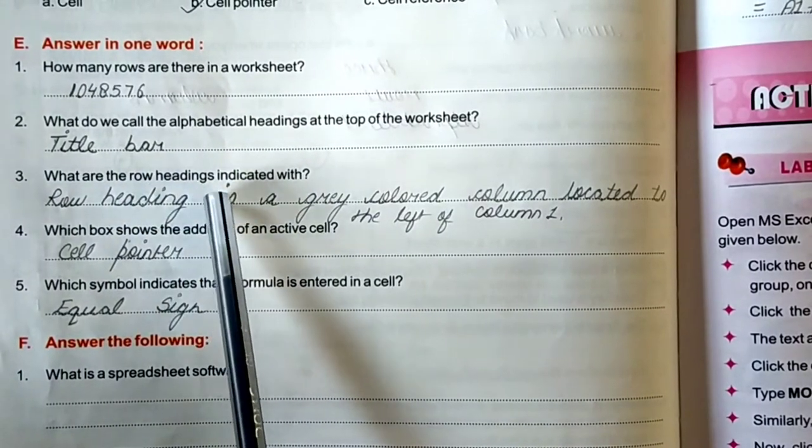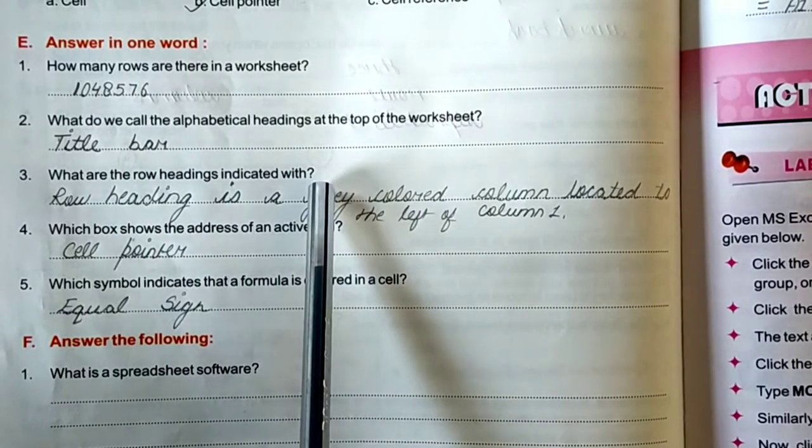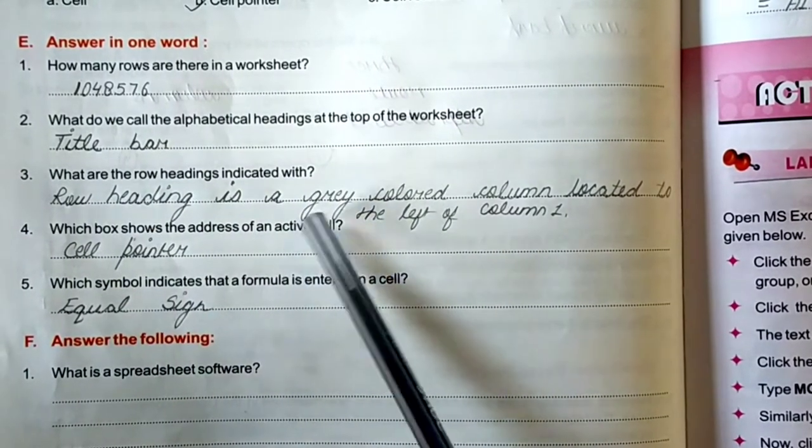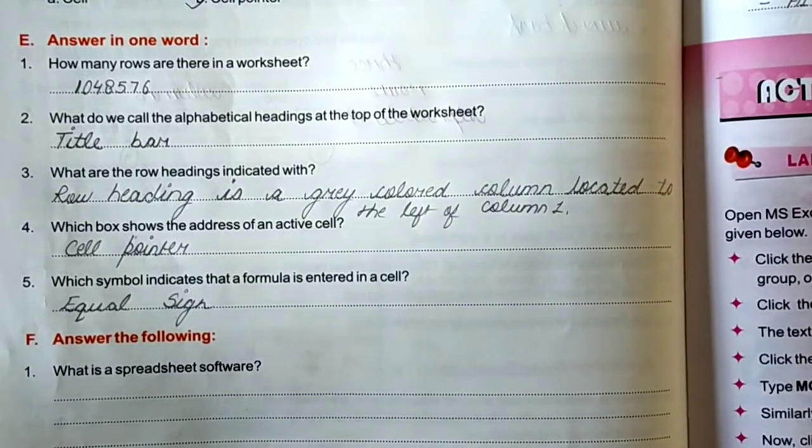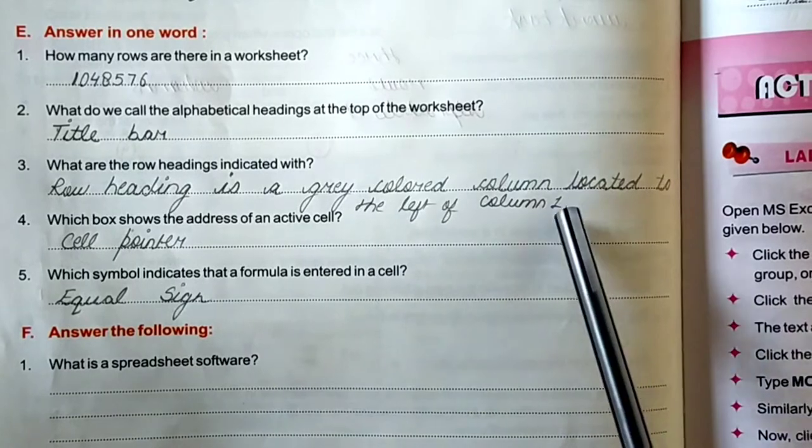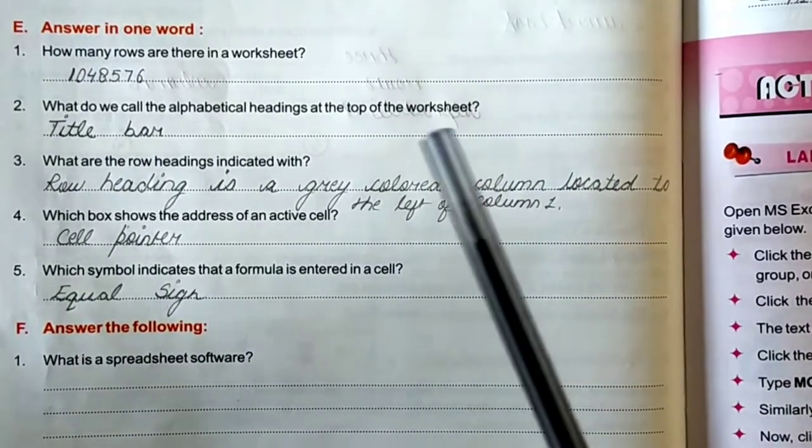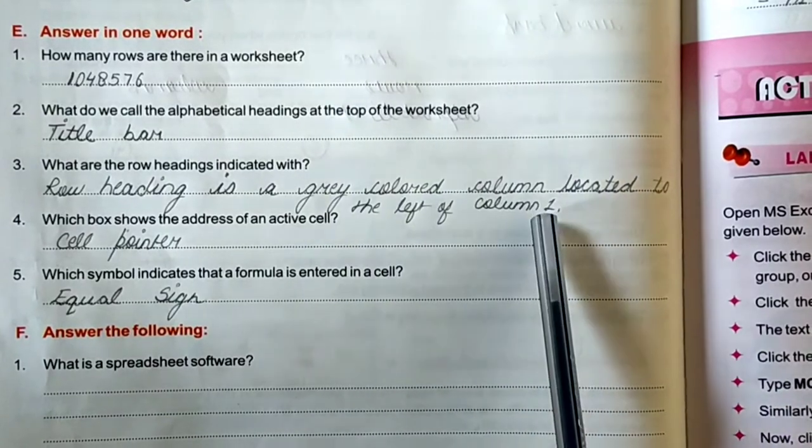Third, what are the row headings indicated with? Row heading is a grey colored column located to the left of column 1. Row heading is a grey colored column, located left side of column 1.